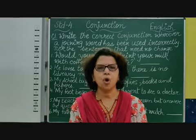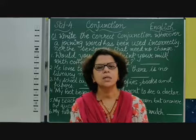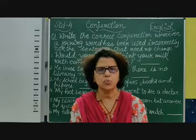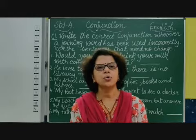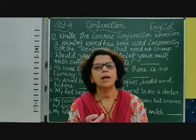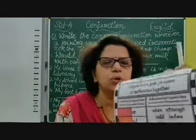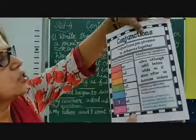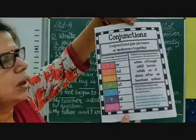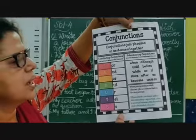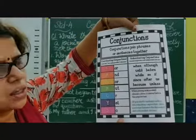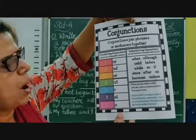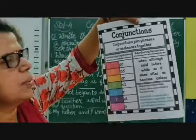Those conjunctions — for, and, nor, but, or, yet, and so — are called coordinating conjunctions. They are collectively remembered by a name called FANBOYS. As you can see: F for 'for', A for 'and', N for 'nor', B for 'but', O for 'or', Y for 'yet', and S for 'so'. In this way, they become FANBOYS. Last week I showed you this information.